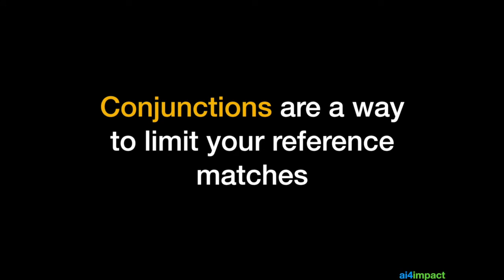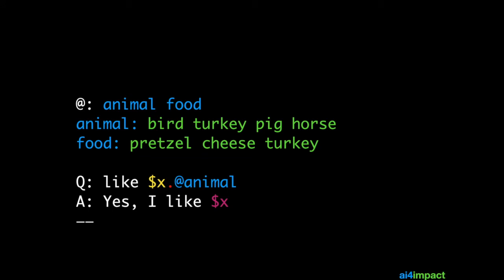Conjunctions are a way for you to limit your reference matches. So let's say we've got two types in this case animal and food. And you can see here for animal we have bird, turkey, pig and horse as our things. And for food we have pretzel, cheese and turkey.